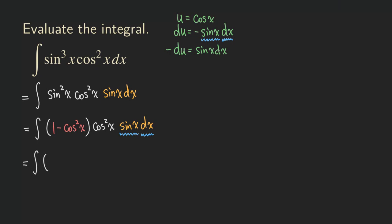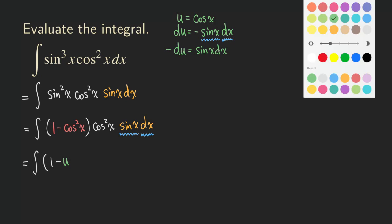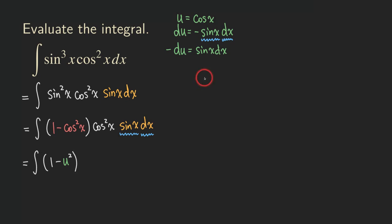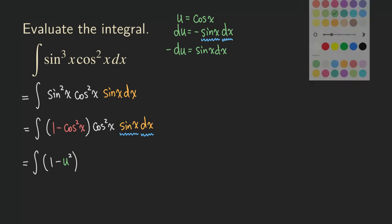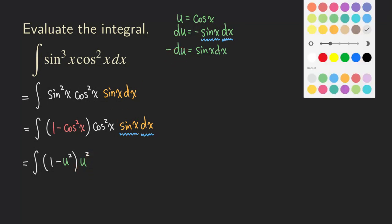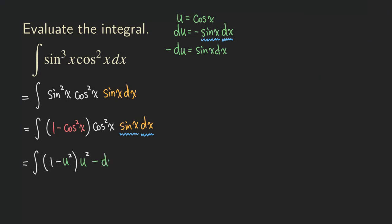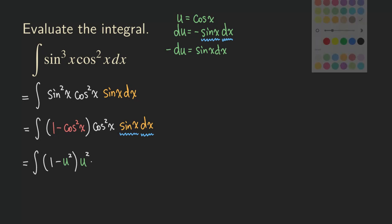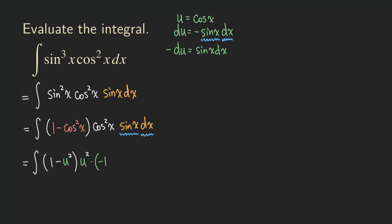We are going to get the integral of 1 minus u squared — that comes from replacing sine squared x — then times u squared, since cosine x is u, and then times negative du. It's important that we put parentheses around negative du to indicate multiplication rather than subtraction. Or you can put a dot in between to make it less confusing, giving negative 1 times du.